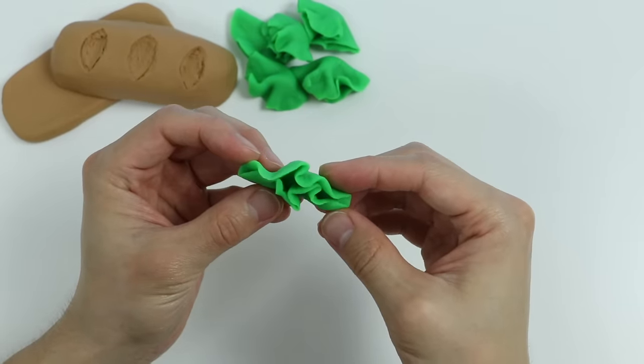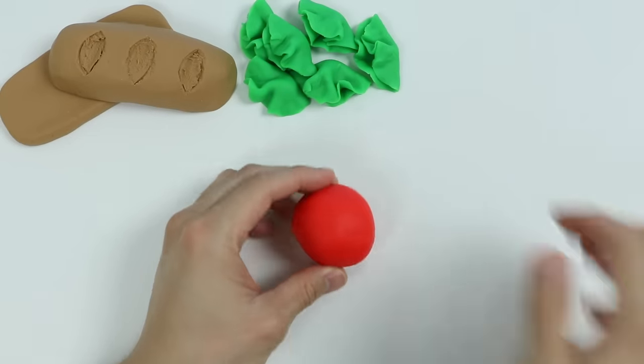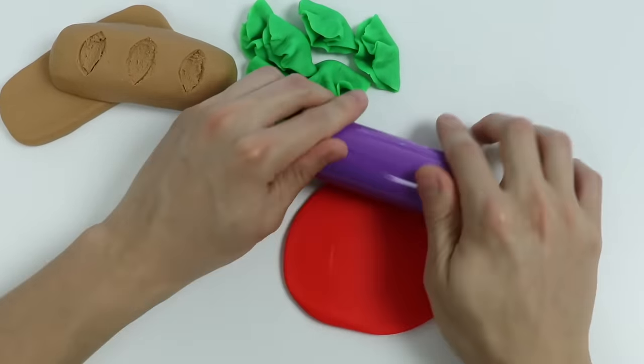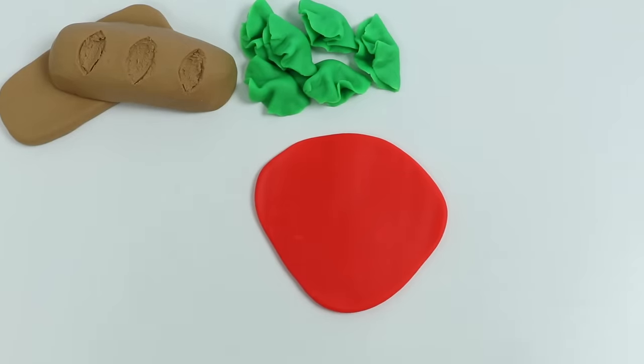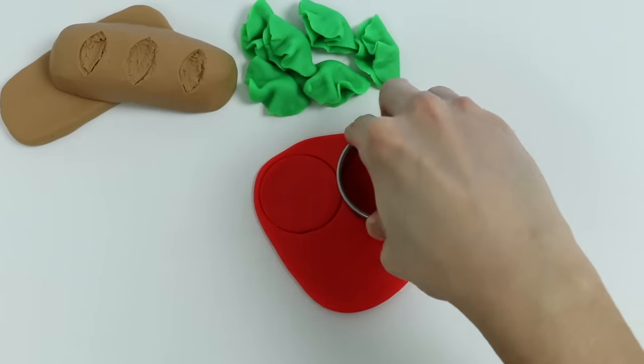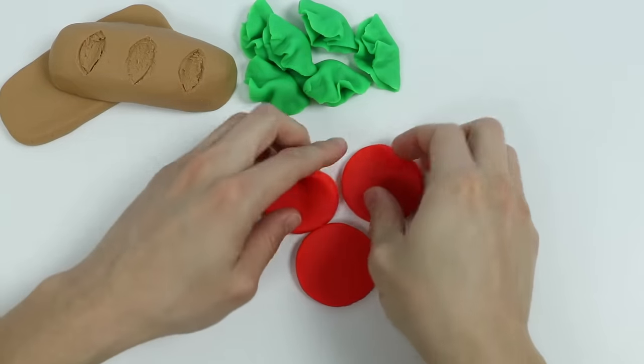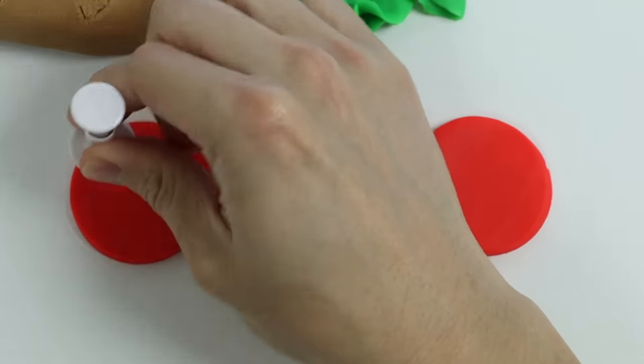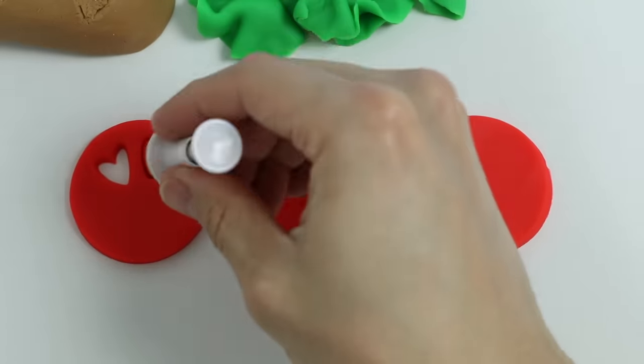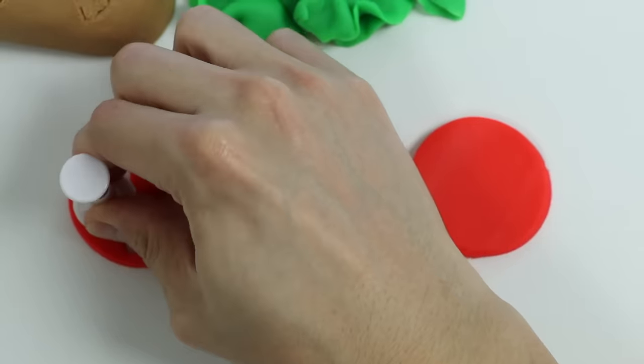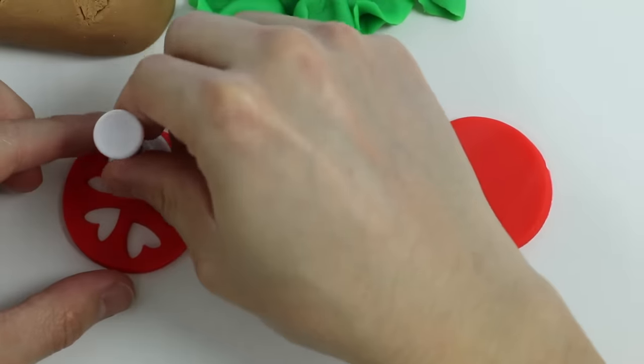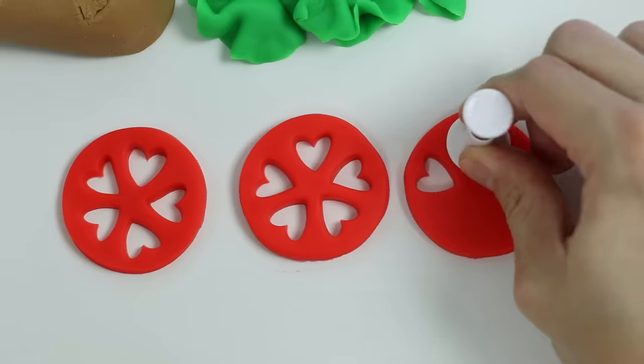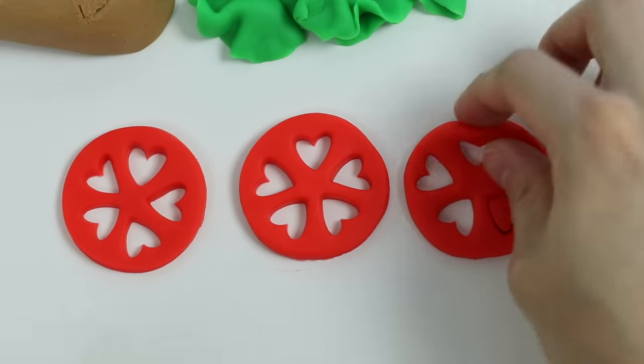There we go, we have all of our lettuce pieces. Now let's roll out some red Play-Doh. Let's make some more circles. Okay, we have three red circles. Now let's use a heart stamper. Do you know what we're making? If you guessed tomato slices, you're correct.